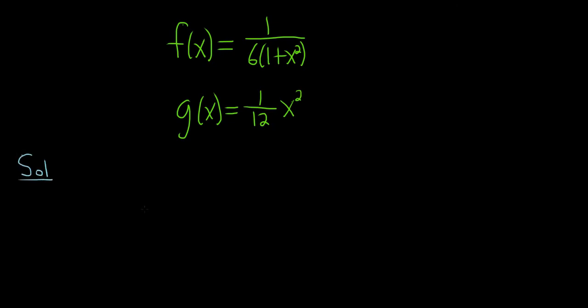So the hardest part will be to graph these two functions. First, note that the graph of 1 over 1 plus x squared, let's ignore the 6 for now. The general shape of this graph is something like this. You might say, how do you know that? I just have it memorized.